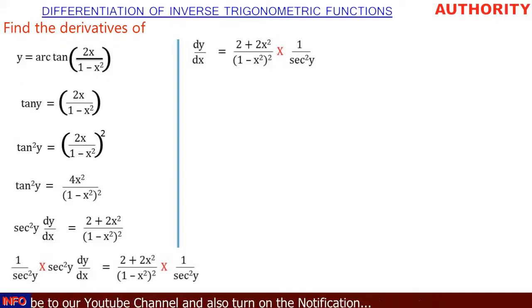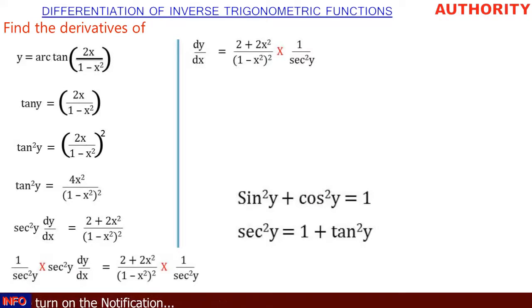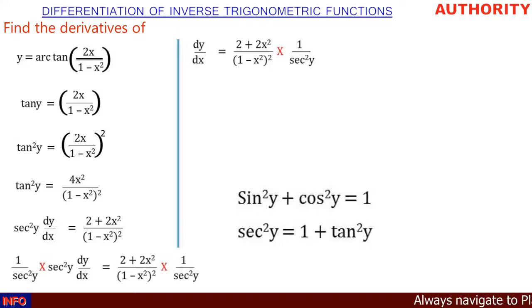Now, sec squared y can be replaced with 1 plus tan squared y. You know from our formula: sin squared y plus cos squared y equals 1, and if we divide through by cos squared y, we get sec squared y equals 1 plus tan squared y. So we replace sec squared y with 1 plus tan squared y.